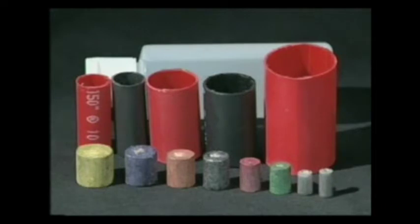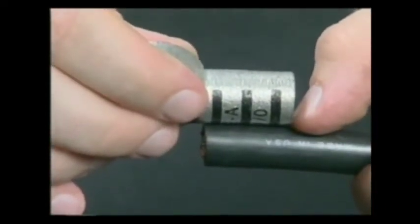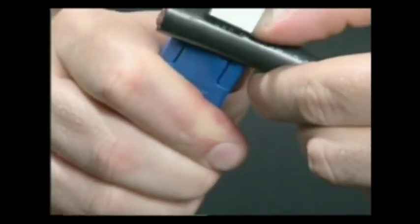To install a solder battery terminal, match the terminal to the cable. Measure the amount of insulation to be stripped. Strip the cable.